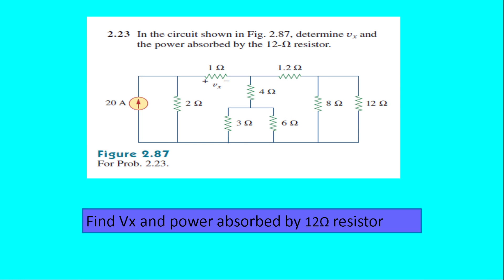Hello everybody. In this video we are going to solve problem number 2.23 from Fundamentals of Electric Circuits by Alexander and Sadiku, 5th edition. We are asked to determine Vx and the power absorbed by the 12 ohm resistance. Vx is the voltage across the 1 ohm resistance, and we also need to find the power absorbed by the 12 ohm resistance.